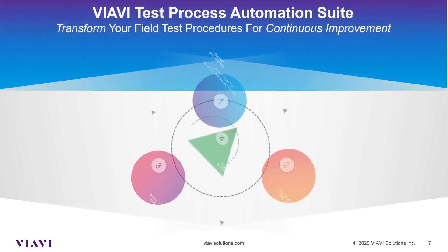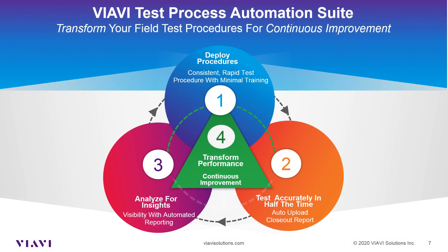The VIAVI Test Process Automation Suite allows you to transform your test procedures for continuous improvement throughout the lifecycle. Step one: deploy consistent procedures that require minimal training. Step two: test accurately in half the time and auto-upload a closeout report for each job. Step three: analyze for insights with the automated reporting visibility. Step four: transform performance and achieve continuous improvement.